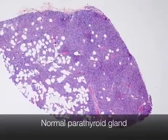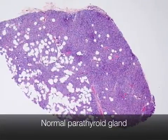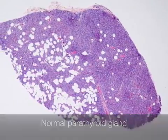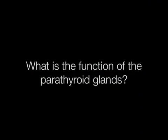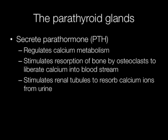This is the histological appearance of a normal parathyroid gland. The parathyroid glands secrete parathormone, which regulates calcium metabolism. It stimulates resorption of bone by osteoclasts to liberate calcium into the bloodstream, and stimulates renal tubules to resorb calcium ions from urine.